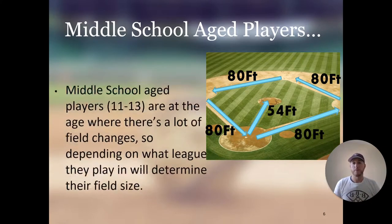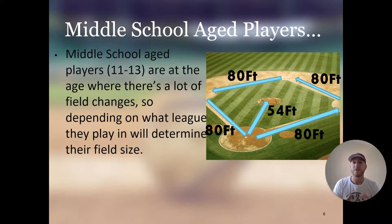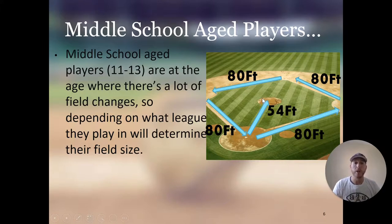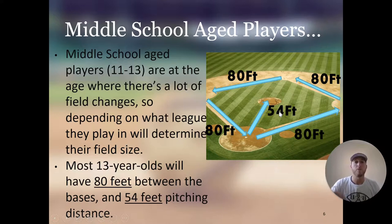Middle school age players, ages 11 to 13, are at the age where there are a lot of field changes. Depending on what league they play in will determine their field size. Middle school age players usually play on 80-foot bases with a 54-foot pitcher's mound. Most 13-year-olds will have 80 feet between the bases and 54 feet pitching distance. This is one level down from the big field and mostly prepares kids for the big field.